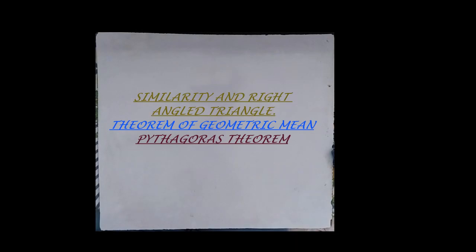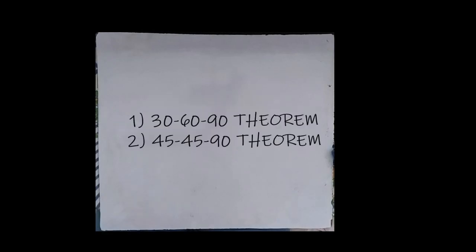In the previous video, we studied similarity and right angle triangles, theorem of geometric mean, and we studied Pythagoras theorem. In this video, we will cover two things: one is the 30-60-90 theorem and the other is the 45-45-90 theorem.